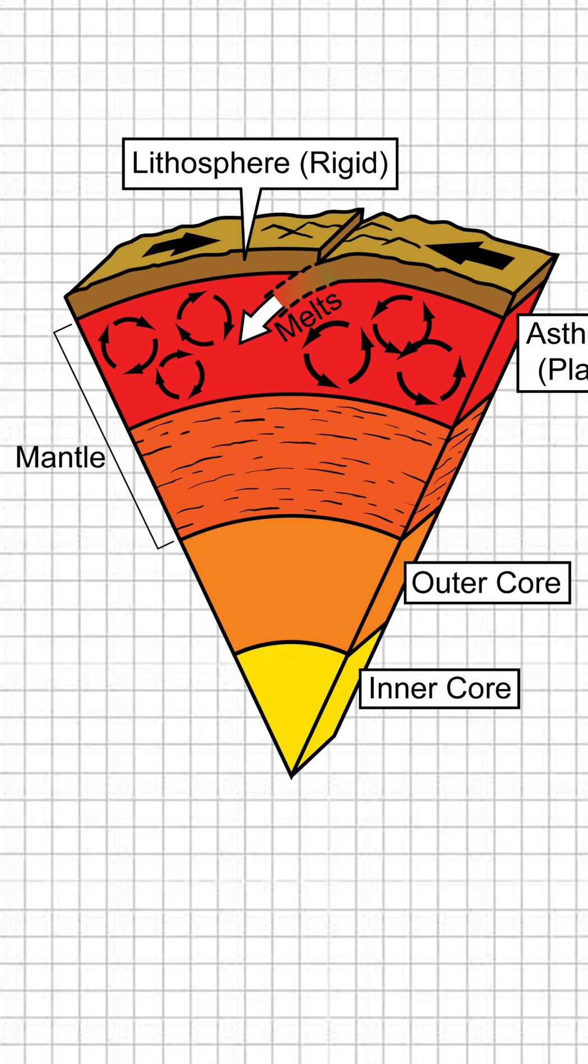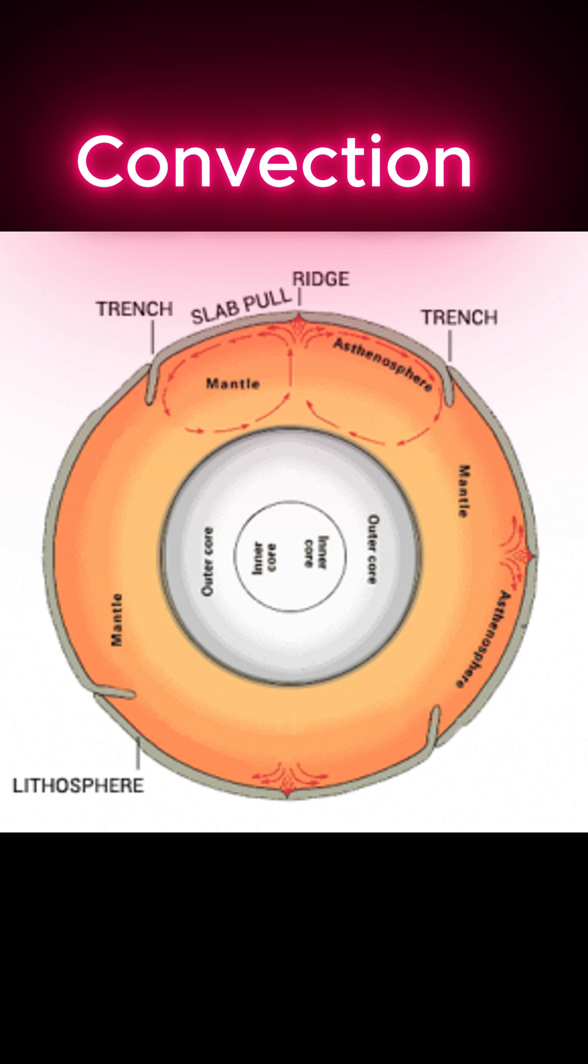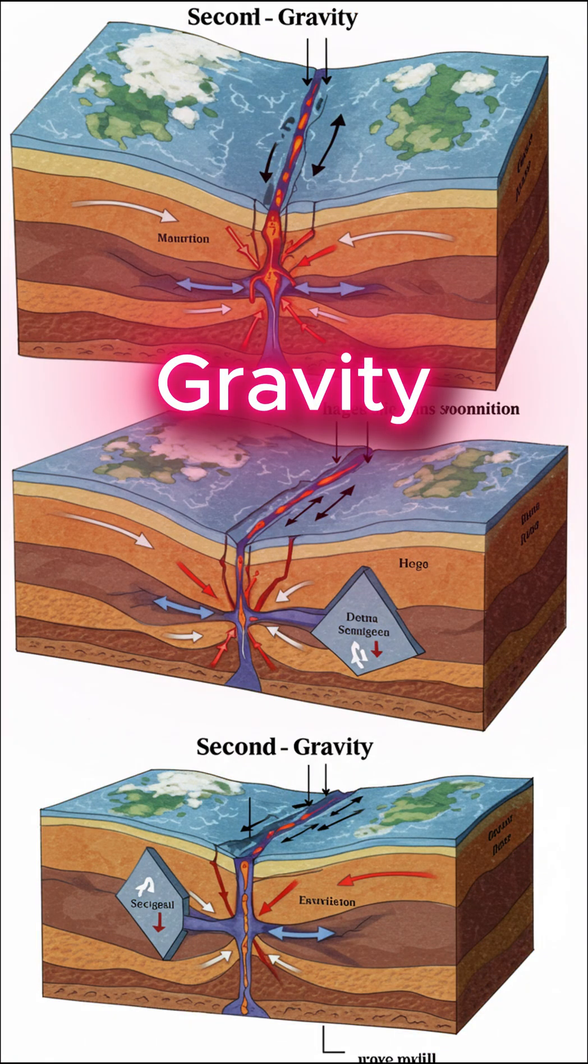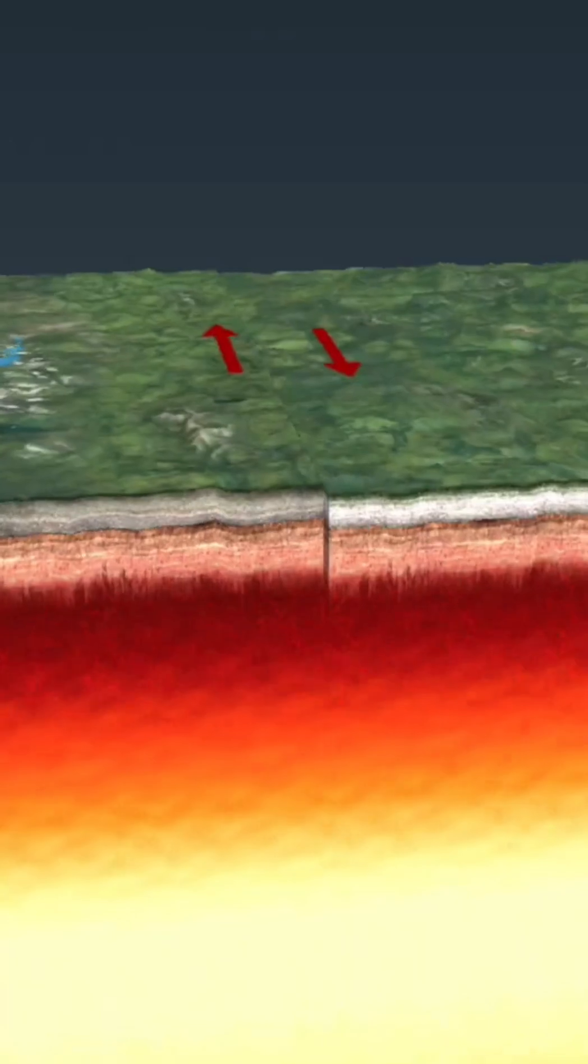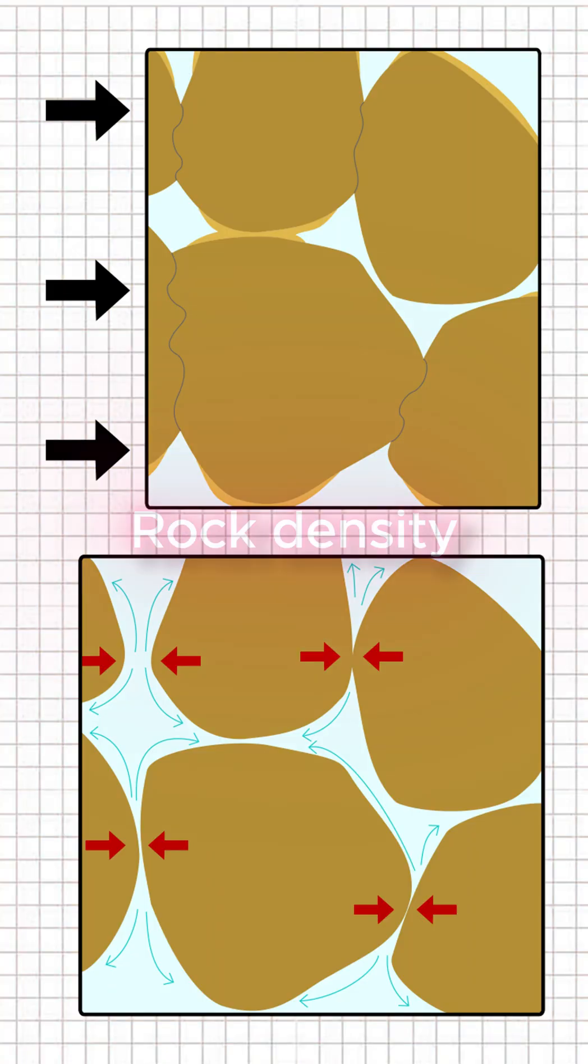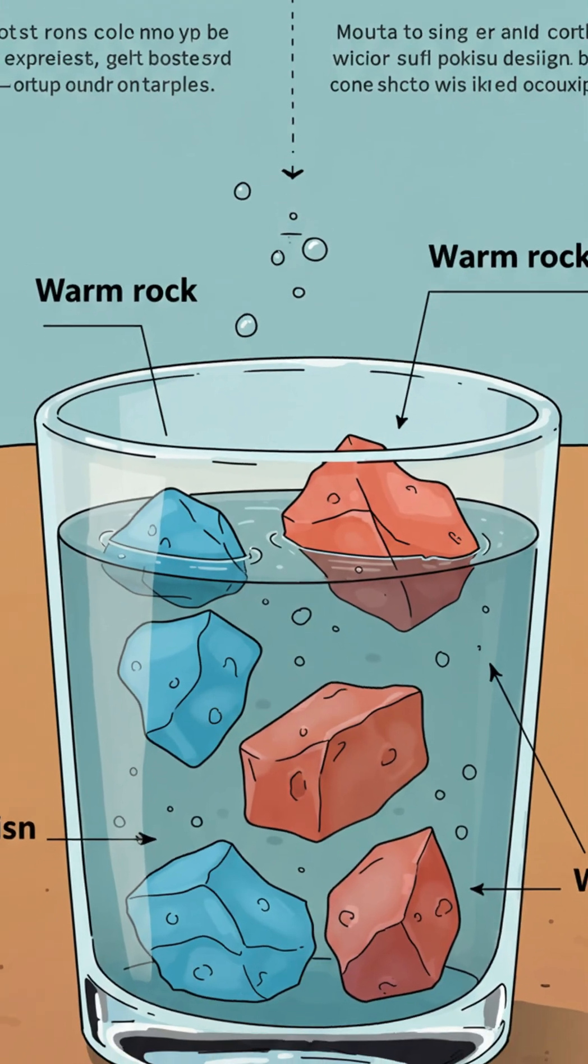Three main reasons. First, convection. Heat inside Earth creates currents that push plates around. Second, gravity. Plates slide downhill from mid-ocean ridges. Third, rock density. Cold rock is heavier than hot rock and sinks down.